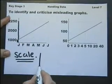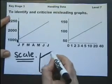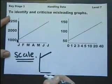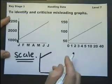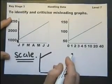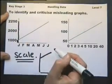If this graph started from zero, then the information would look like this, which is less impressive. So point number one, it doesn't start from zero. And point number two, the scale is not constant.